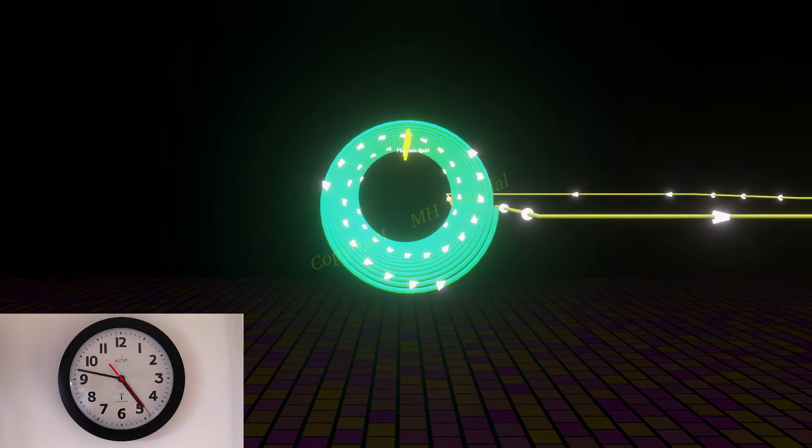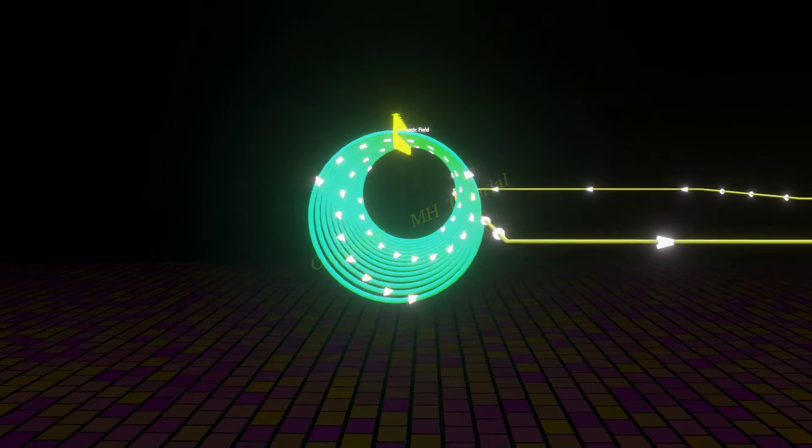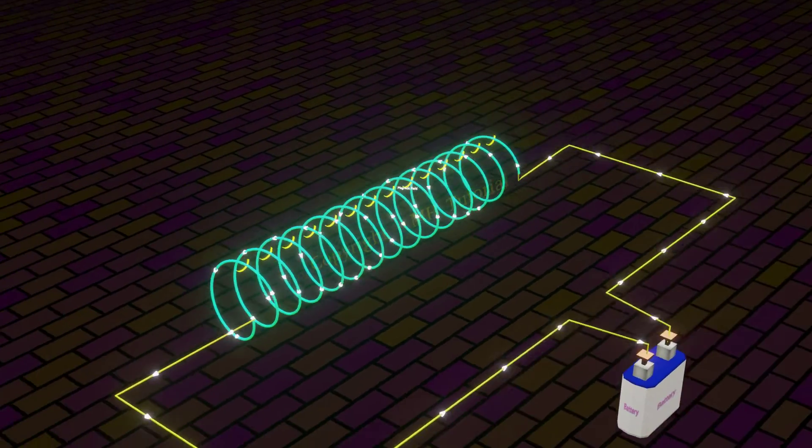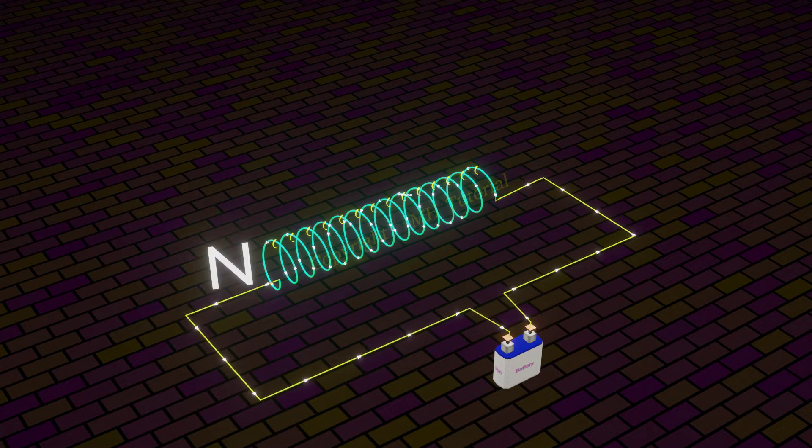And from the other end, the current appears to rotate in anticlockwise direction. The side of anticlockwise current is the north pole of the solenoid.